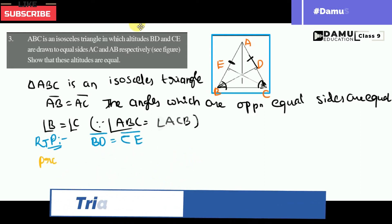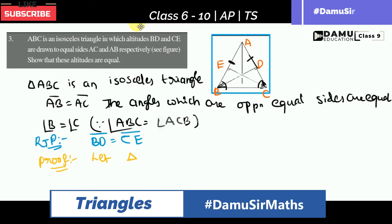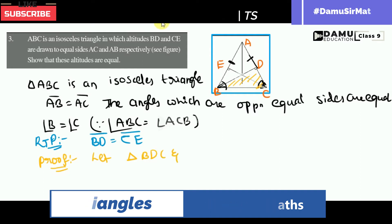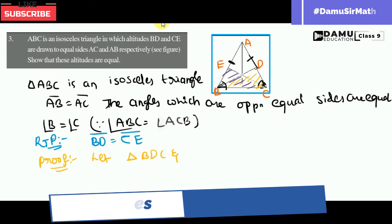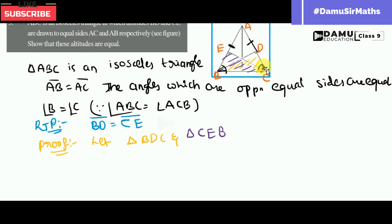So let us try to prove. Let us consider triangle BDC and triangle CEB. We have to consider these two triangles and identify what common sides and angles are equal.